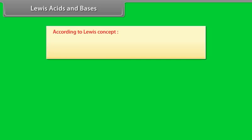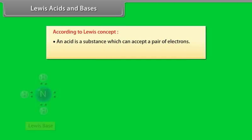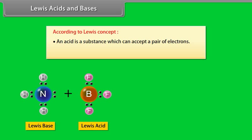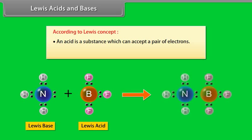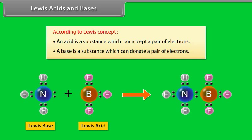Lewis acids and bases: According to the Lewis concept, an acid is a substance which can accept a pair of electrons, and a base is a substance which can donate a pair of electrons. For example, in the reaction, BF₃ acts as the acid.